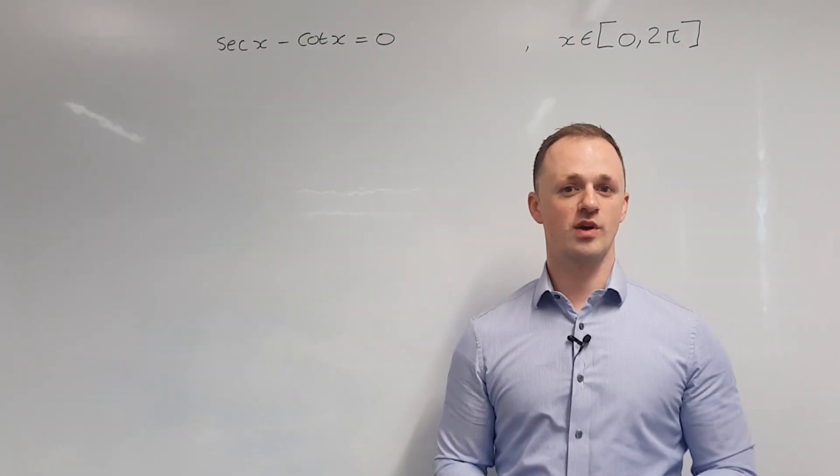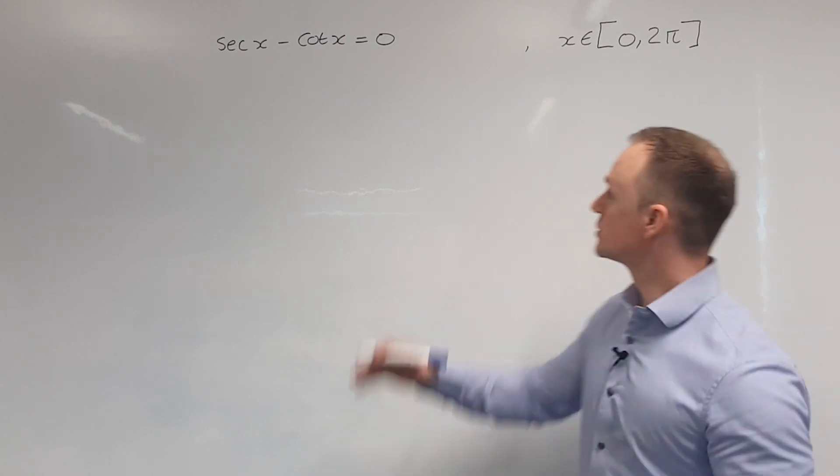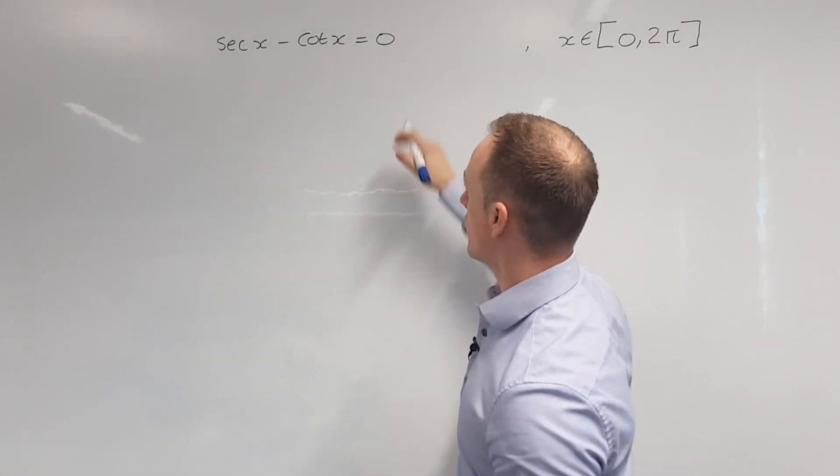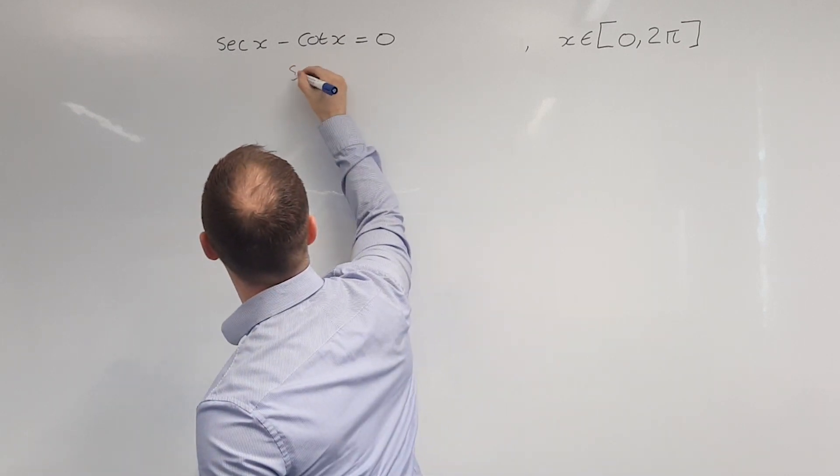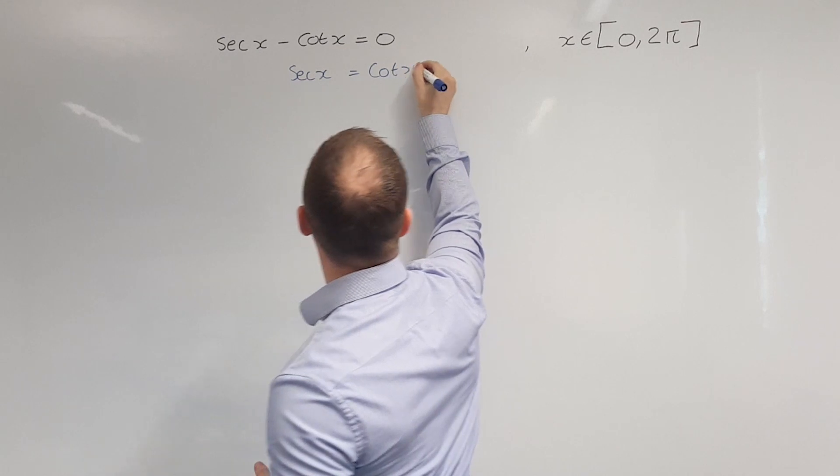In this example, we're solving the equation sec x minus cos x equals 0. The first thing we're going to do is take the cos x over to the right-hand side. That gives us sec x equals cos x.